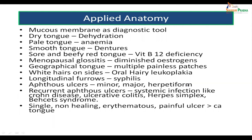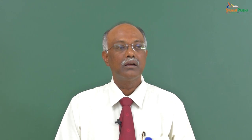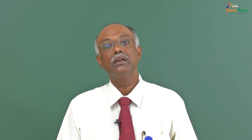Recurrent aphthous ulcers are usually indicative of systemic conditions like Crohn's disease, ulcerative colitis, herpes infection, or Behçet's syndrome. A single non-healing erythematous painful ulcer — red in color, long-standing — is usually indicative of a carcinomatous growth in the tongue. So these are the various things which we can find out just by looking at the tongue, making the mucous membrane a very good diagnostic tool.